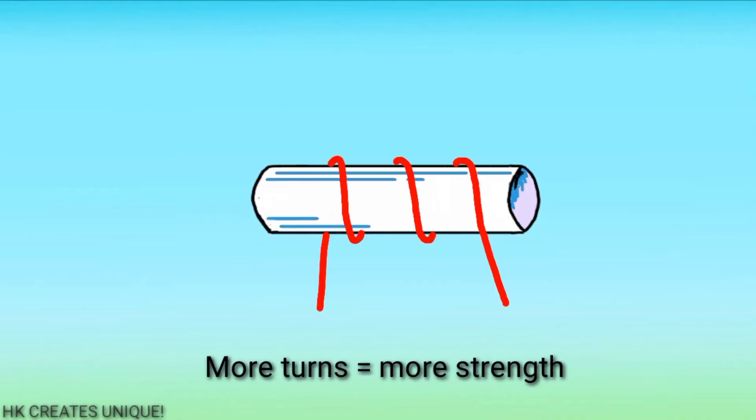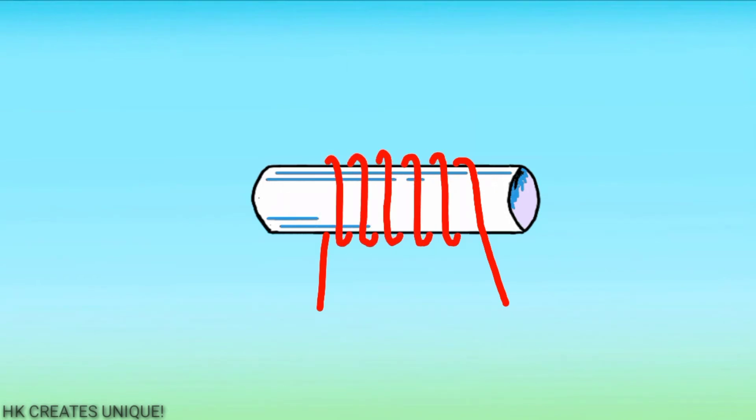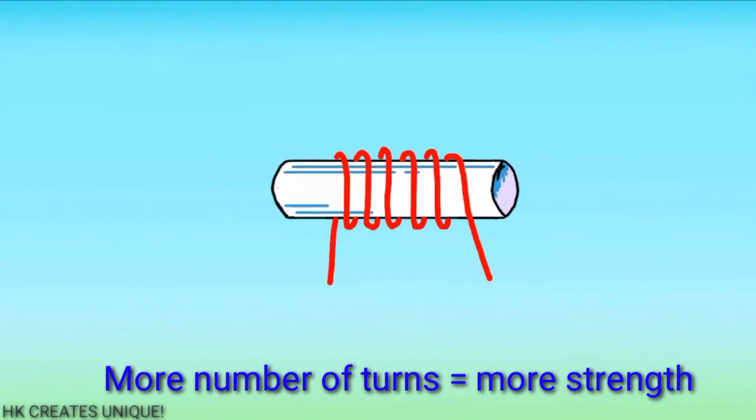More number of turns of magnet wire in a given length means more strength. For example, an electromagnet having six turns of magnet wire will have more strength than an electromagnet having three turns of magnet wire. So more number of turns of magnet wire means more strength.